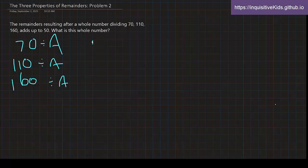So each of these had remainders. So the remainders, we don't know them, but we can set them as X, Y, and Z. So X, Y, and Z adds up to 50. So X plus Y plus Z is equal to 50.